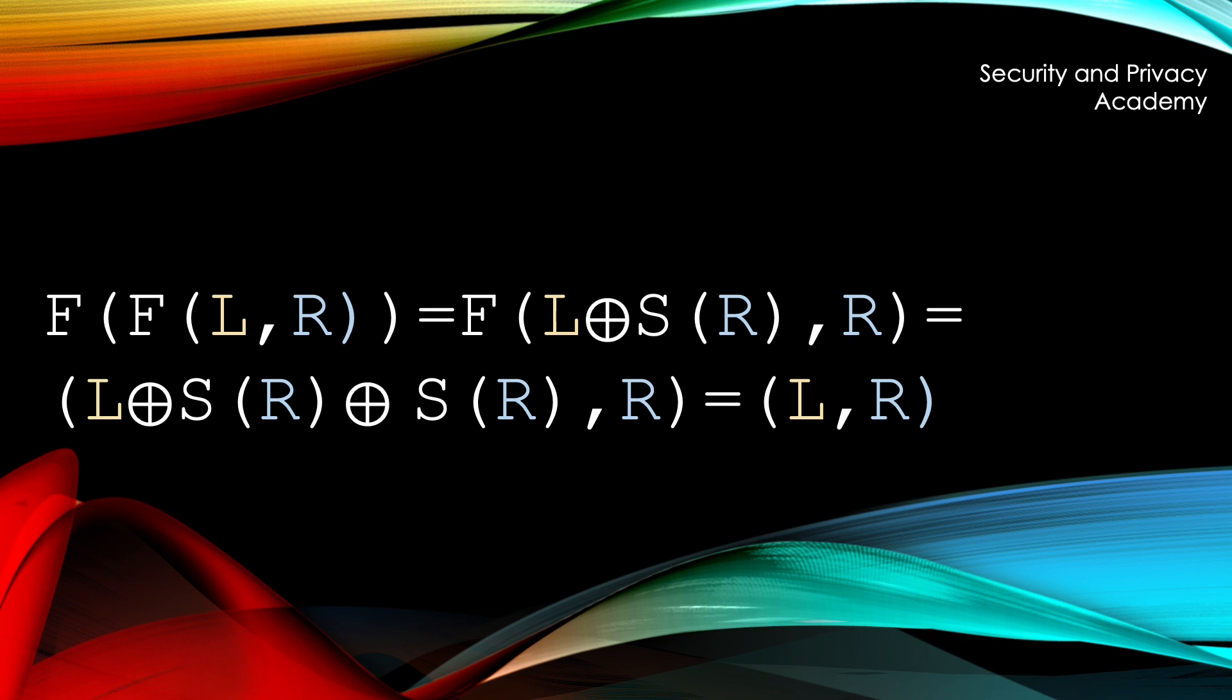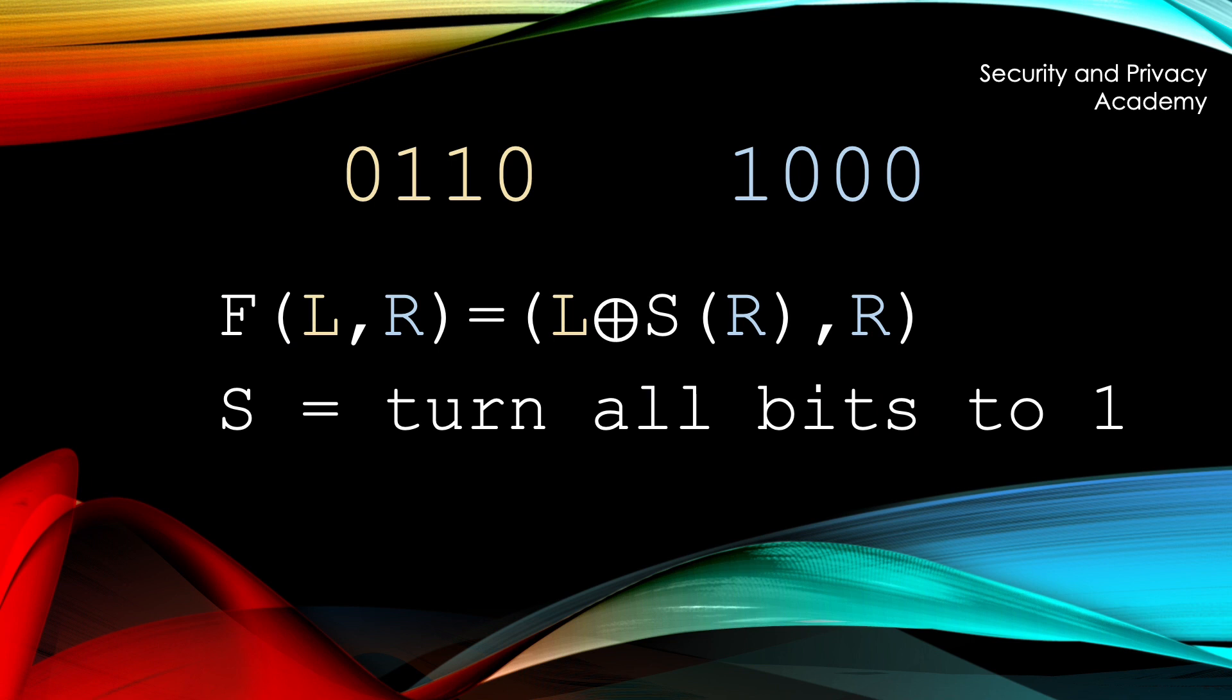If we look at our example again and say that S simply switches all bits to 1, which is obviously not reversible. But you will see that we don't need the reverse operation, as demonstrated before. The result is now these bits.